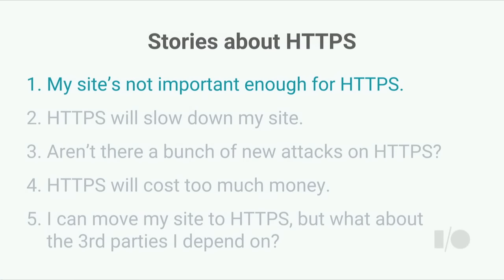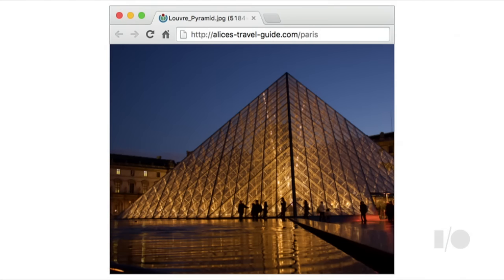My first story is about a web developer named Alice. Alice runs an online travel guide — a very cool travel guide, but it doesn't have any privacy or security sensitive content. It doesn't have any login forms or credit card forms or anything like that. So Alice doesn't really think of her site as something that needs HTTPS. But one day, Alice is talking to her friend, and her friend says that on her computer, Alice's travel guide is really slow and sluggish.